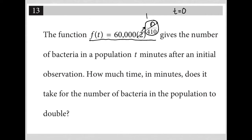So that tells me when t is 0, f(0) equals 60,000. What does that mean? That's at the initial point. So initially, before any time has passed, the number of bacteria in the population equals 60,000. So how do I get to 120,000?